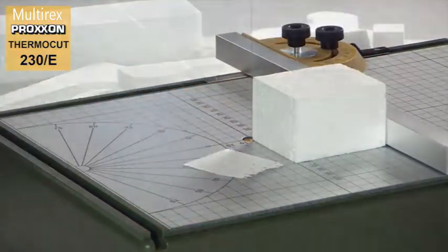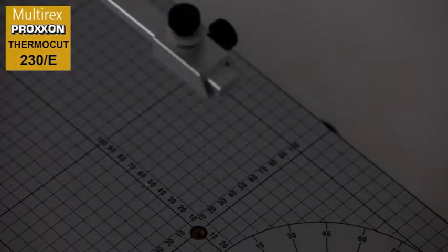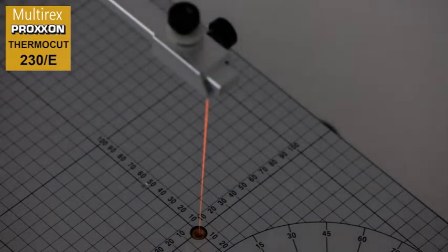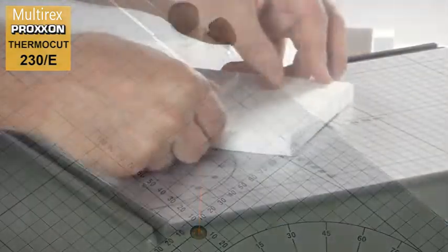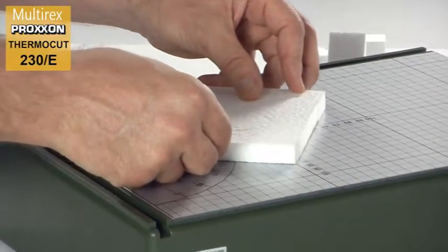The functional principle is particularly effective. A high quality cutting wire which is only 0.2mm thick is heated with a perfectly safe voltage of 10V and cuts through our workpiece like a hot knife through butter.